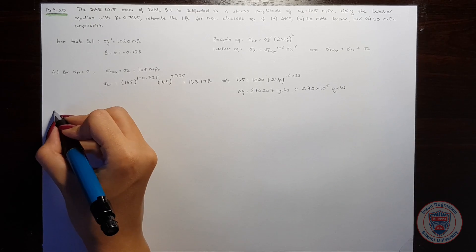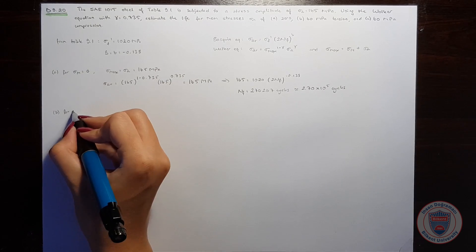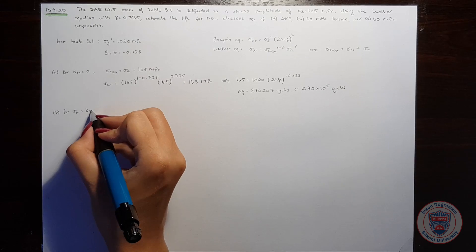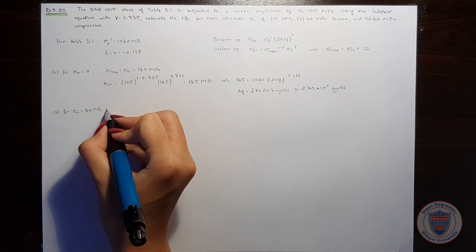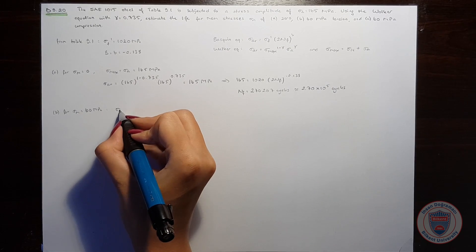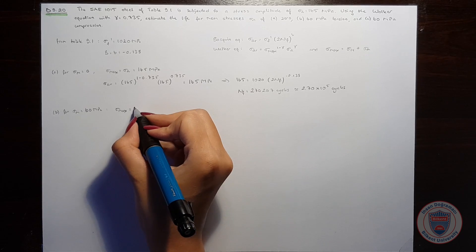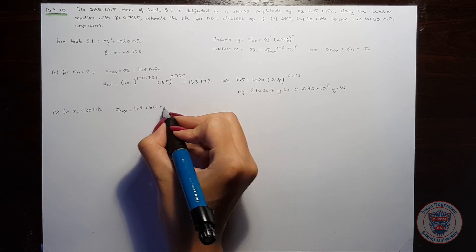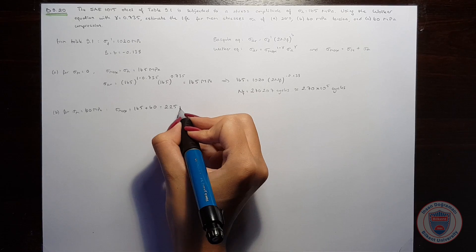For part B, with mean stress of 60 MPa tension, sigma max equals 165 plus 60, which is 225 MPa.